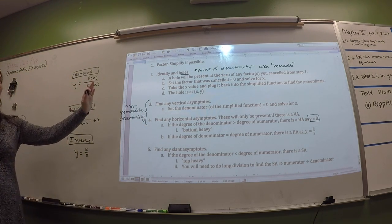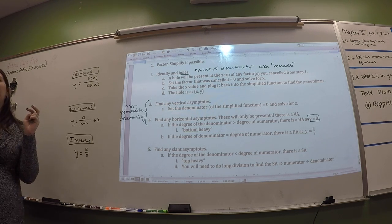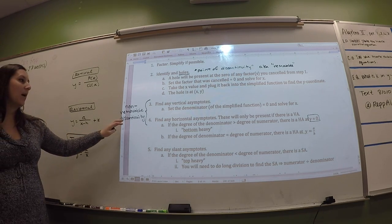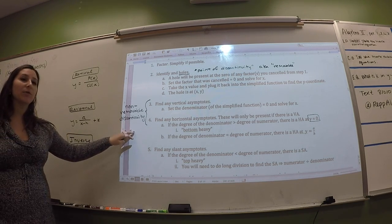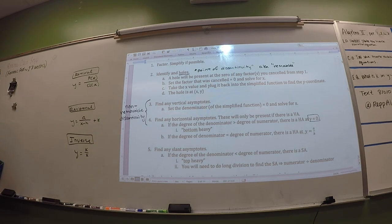So like I said before, holes are points of discontinuity — they're removable, because you can remove them, kind of. So they're called removable points of discontinuity. Asymptotes are non-removable types of discontinuity. You can't remove them. We can remove a hole by canceling a factor, and then you just get a point instead of like a whole line.